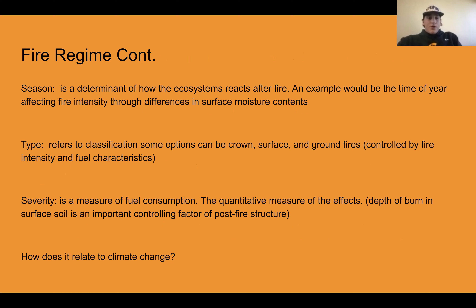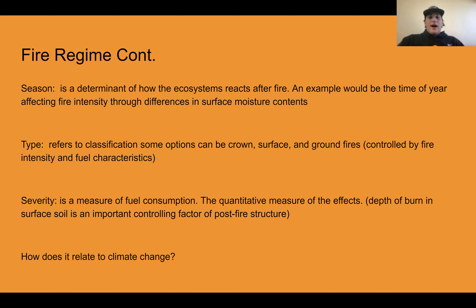Seasonality — component four — is how we determine how ecosystems react to fire, with an example being the time of year affecting fire intensity through differences in surface moisture content. The fifth component, type, refers to the classification of the type of fire — whether it's a crown fire, surface fire, or ground fire — and they're all controlled by fire intensity and fuel characteristics. The sixth is severity, which is the measure of fuel consumption and the quantitative measure of the effects of the wildfire.